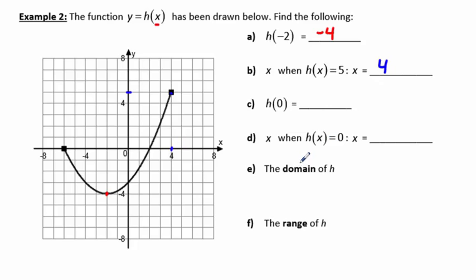Part c, h of 0. Again, when the value is on the inside, that's the x value. So the x value is 0. We're going to go down and find the y value. That's negative 3.